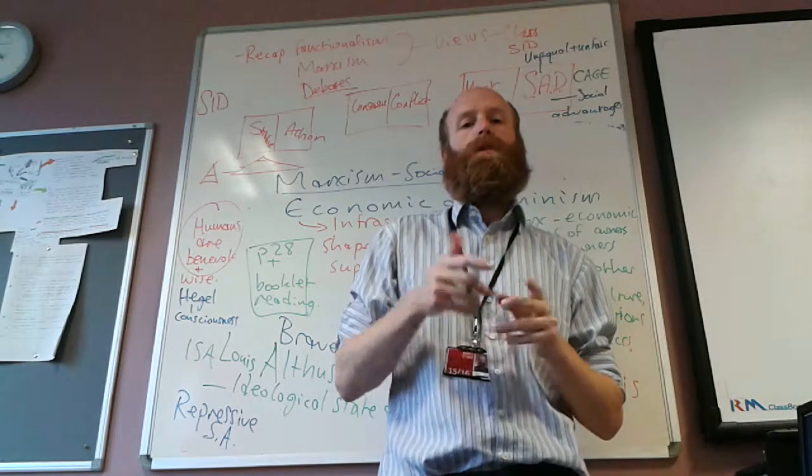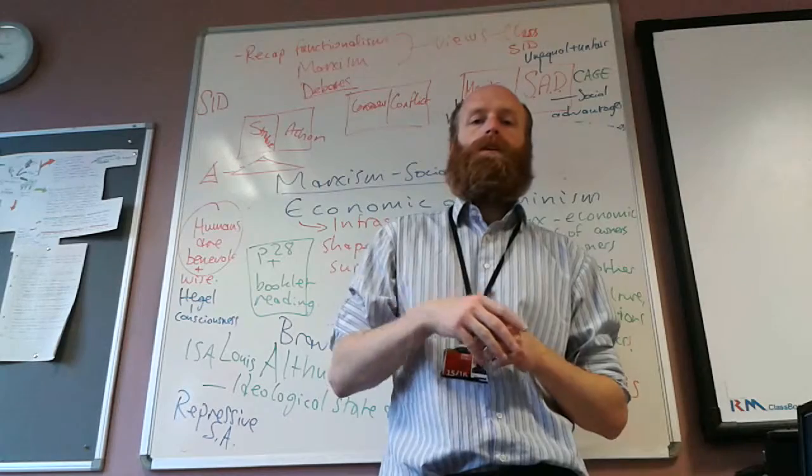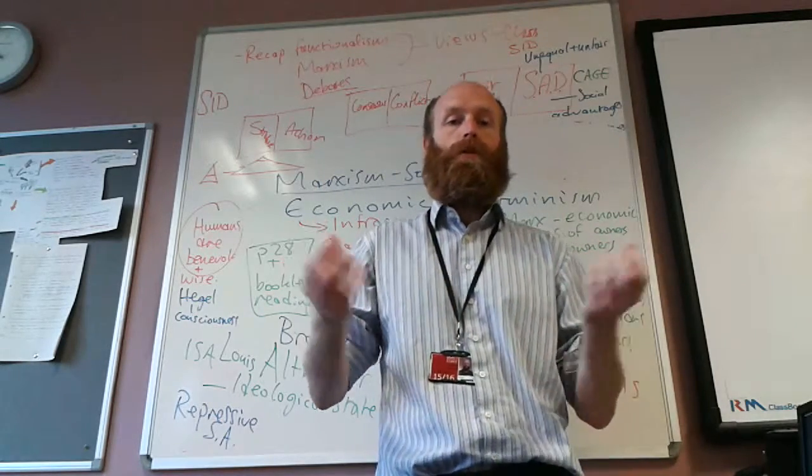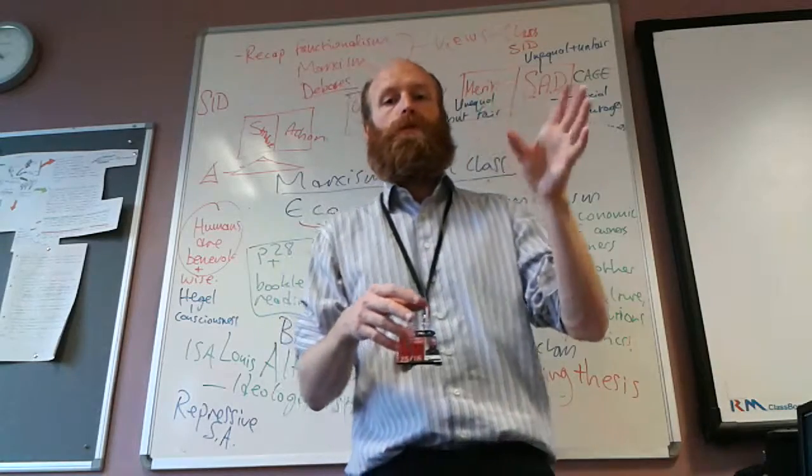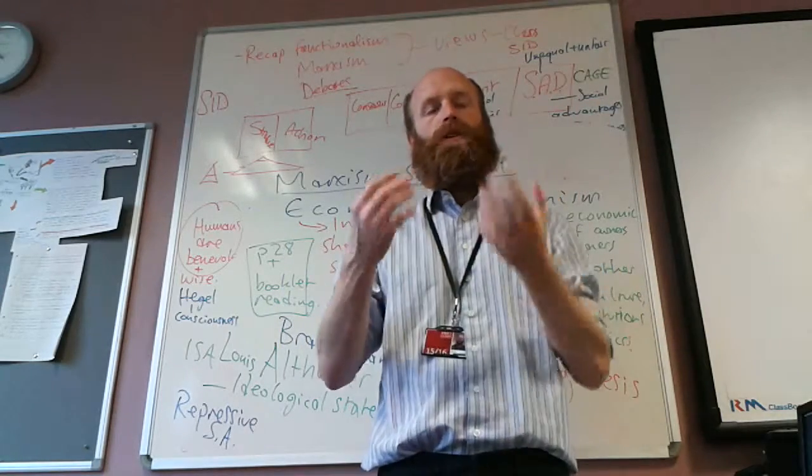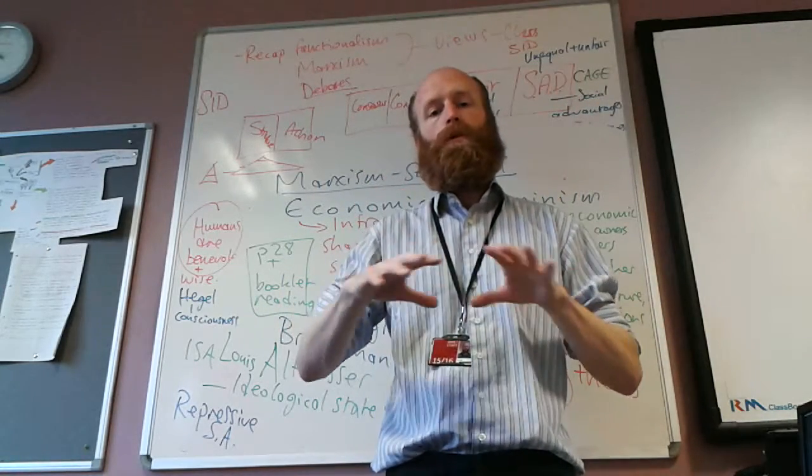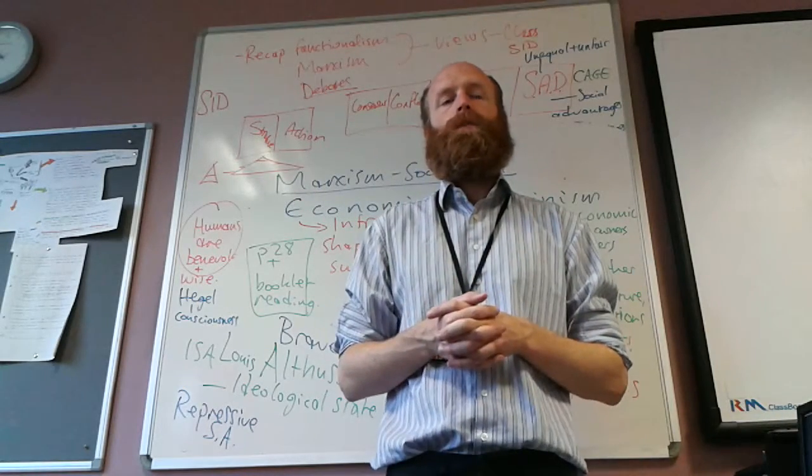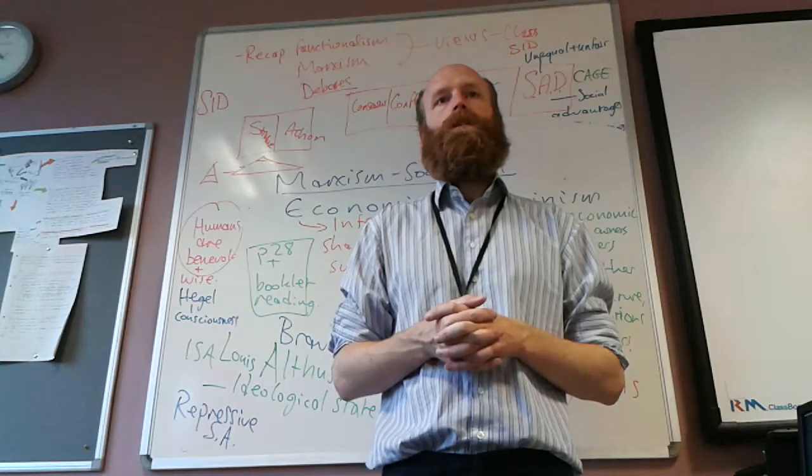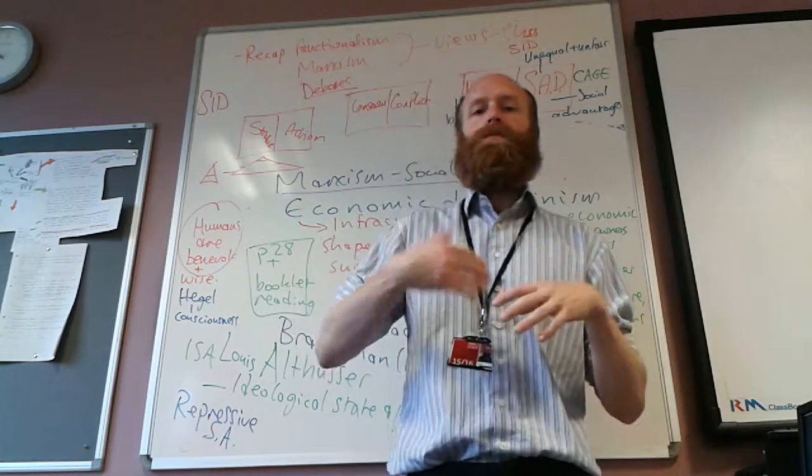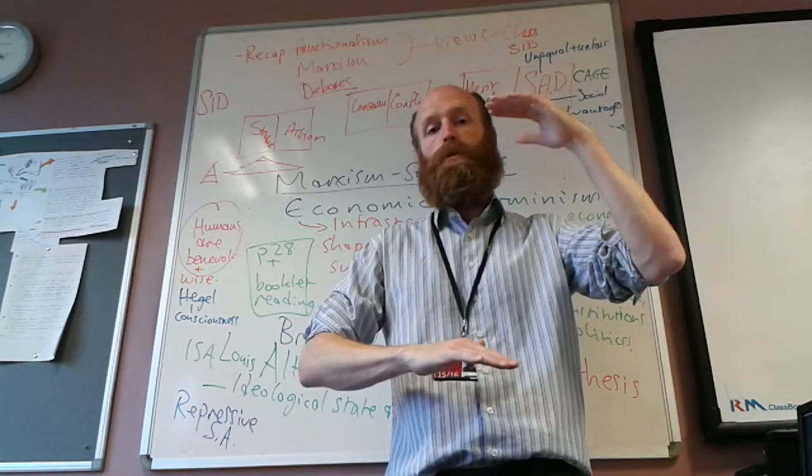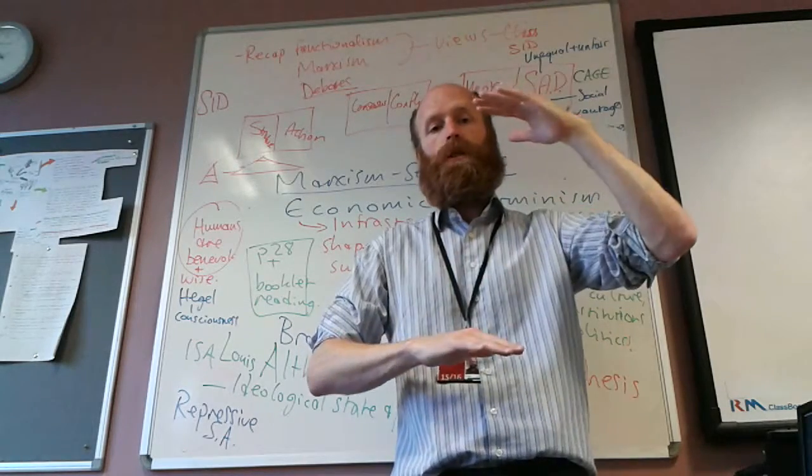According to Marx, over time there will be this proletarianization process. Proletarianization—the proletariat are the poor, bourgeoisie are the rich—so proletarianization is a process where more people join the working class, more people become working class. This proletarianization process leads to polarization, a widening gap between the rich and poor, between the owners and the non-owners.